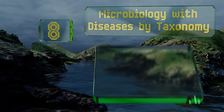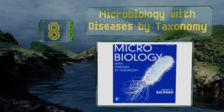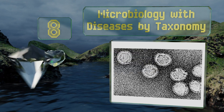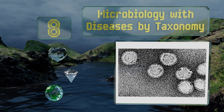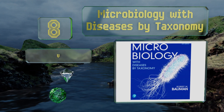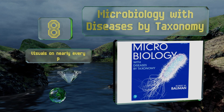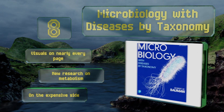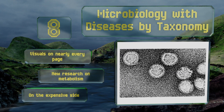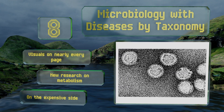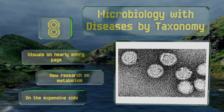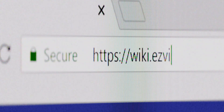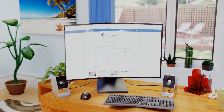Coming in at number 8, newly updated for 2019: Microbiology with Diseases by Taxonomy takes great care to emphasize the importance of this discipline. The sections are organized to help readers recognize the shared characteristics among many different types of microbes. There are visuals on nearly every page and new research on metabolism. However, it is on the expensive side.